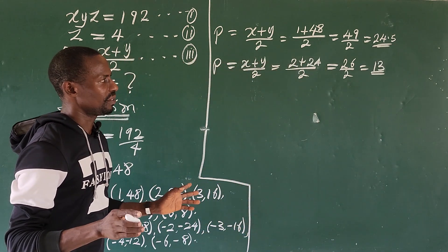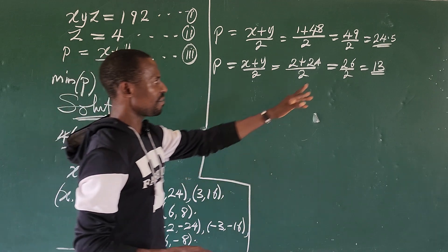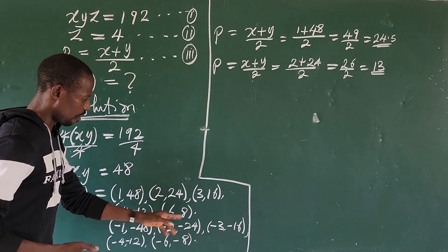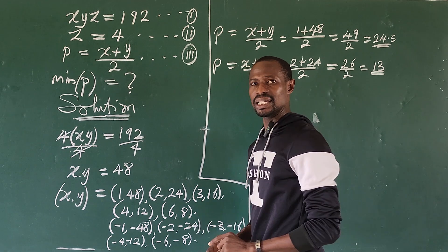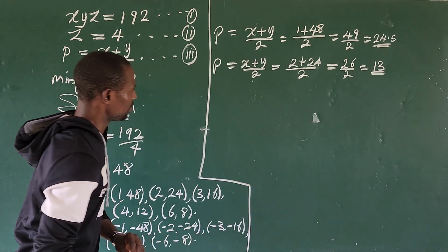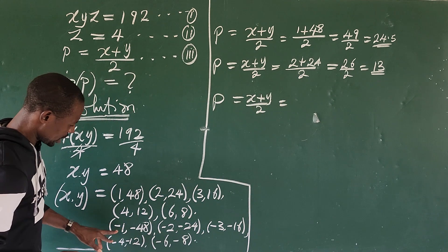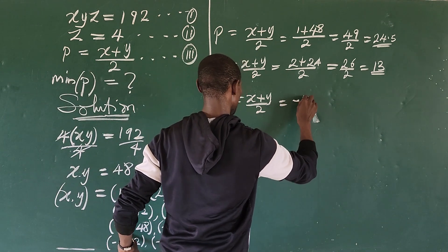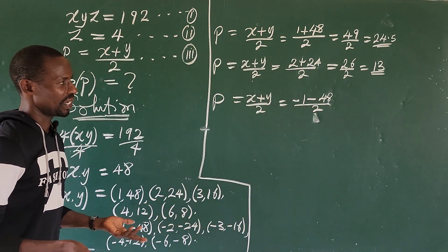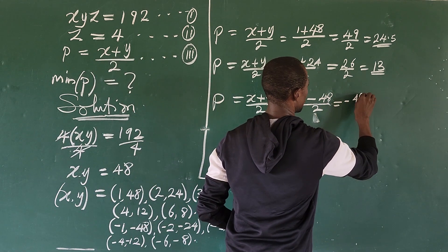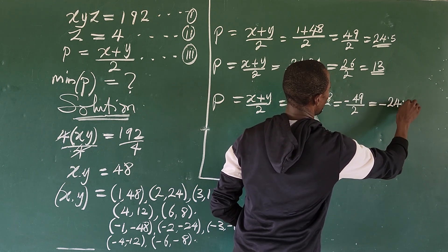Going down, (3 + 16) over 2 gives us 14 over 2, which is 7. So the positive pairs are decreasing, no need to check all of them further. Since we are looking for the minimum value of p, let's jump to the negative terms. For the first negative case: p equals (−1 + (−48)) over 2 equals −49 over 2, which gives us −24.5.